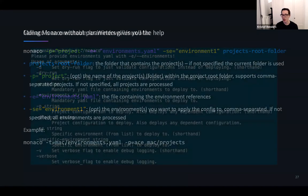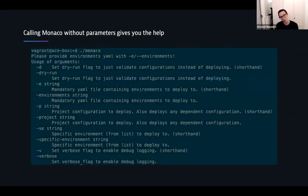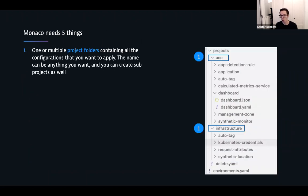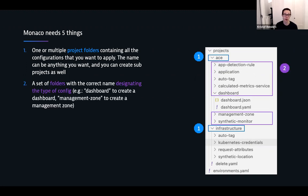If you execute Monaco without any parameters, it gives you the help. Monaco needs five things: first, one or more project folders — here I have two projects, one called ACE, one called infrastructure, where I store all my configuration. These are freeform — you can name them whatever you want, though they cannot use the name of a particular configuration type. You can also create sub-projects. Then within each project, you need to create folders that have the correct name to designate which type of configuration it is — for example 'dashboard' to create a dashboard, 'management-zone' to create a management zone. This is very important because Monaco uses that folder name to determine which API endpoint to target.